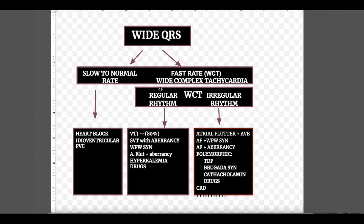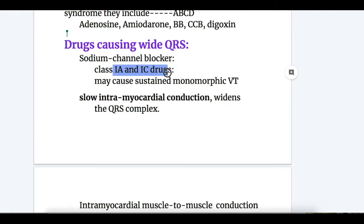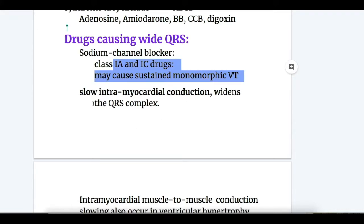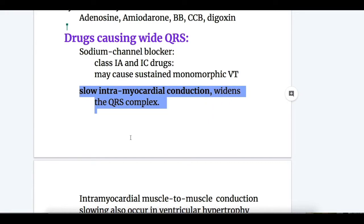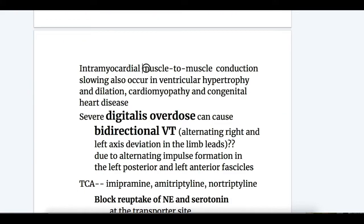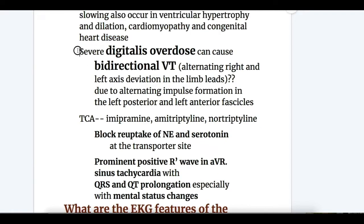Regarding regular rhythm wide complex QRS tachycardia caused by drugs — three types: First, sodium channel blockers (Class 1A and 1C drugs) cause sustained monomorphic ventricular tachycardia by slowing intramyocardial conduction, which widens the QRS complex. Intramyocardial muscle-to-muscle conduction slowing also occurs in ventricular hypertrophy, dilated cardiomyopathy, and congenital heart diseases.